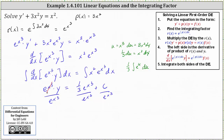Simplifying, the general solution is y equals one third plus c times e to the power of negative x cubed. This is the general solution using the technique of an integrating factor.